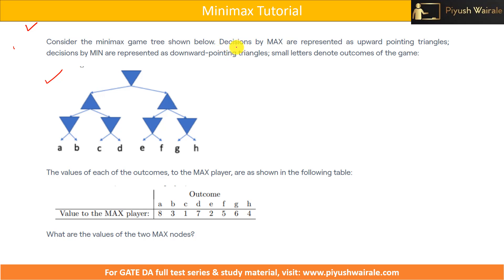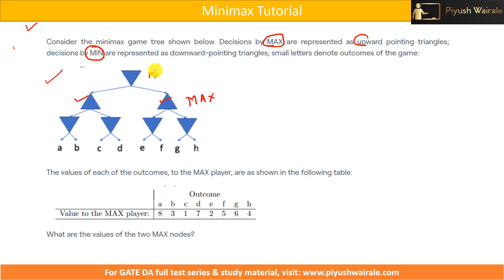The information given is: decisions by max are represented as upward pointing triangles — you can see upward pointing triangles here, so these are basically the max player. Decisions by min are represented as downward pointing triangles, so these are the min players.